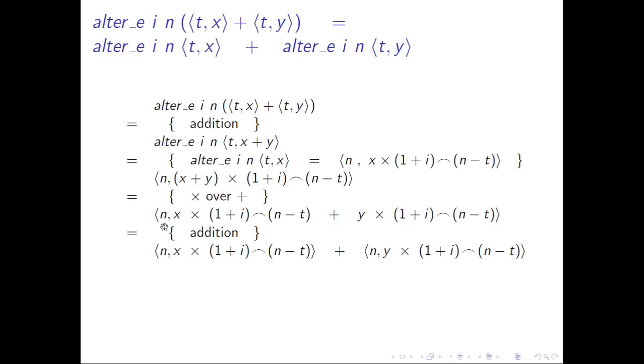And then we'll apply cash flow addition again. So now we have two cash flows: one with the x multiplication, the other with the y multiplication. All that's left to do is to apply the definition of ALTAEIN once more, and we have our target.